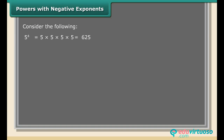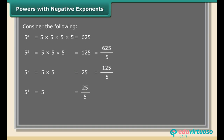Consider the following pattern: 5⁴ = 625, 5³ = 125 = 625/5, 5² = 25 = 125/5, 5¹ = 5 = 25/5, 5⁰ = 1 = 5/5. Each previous number is divided by the base 5.